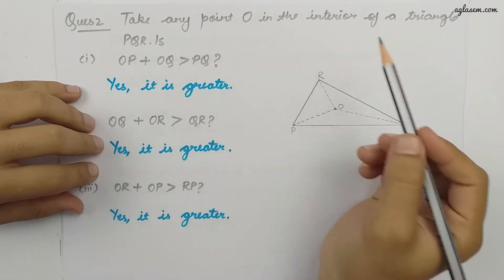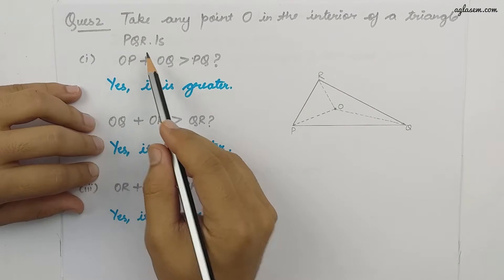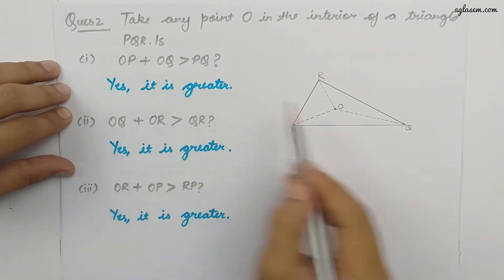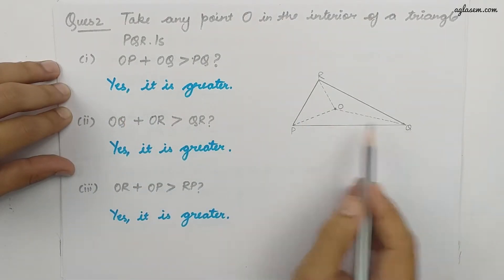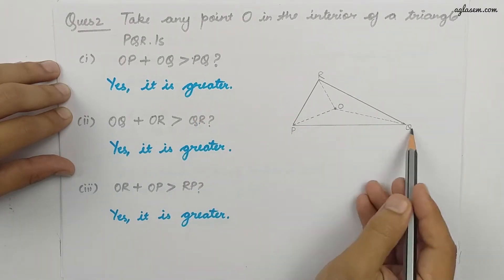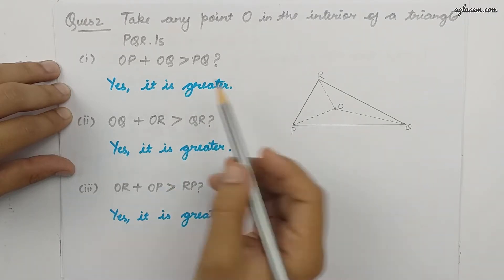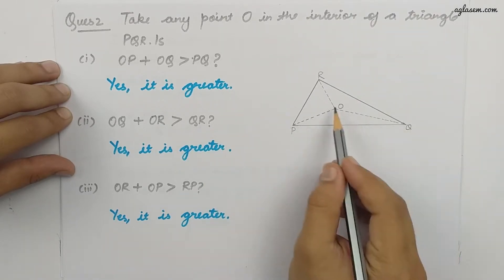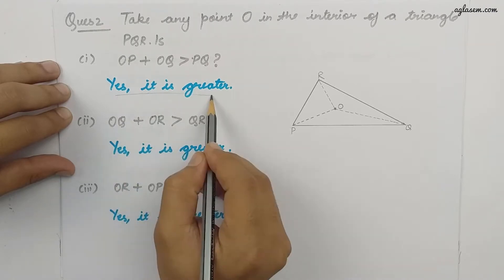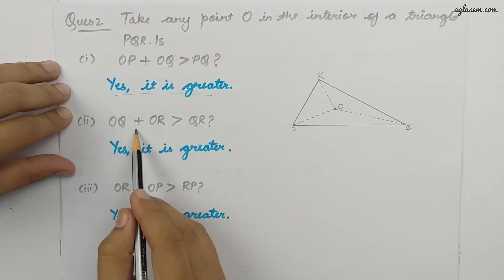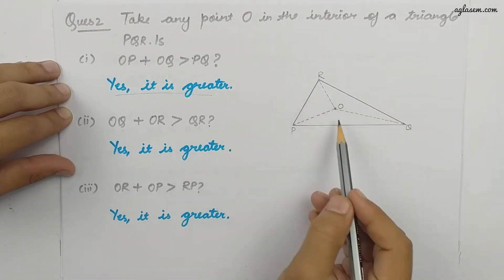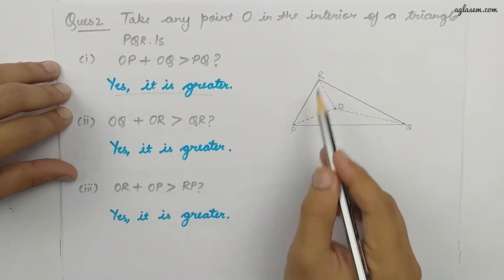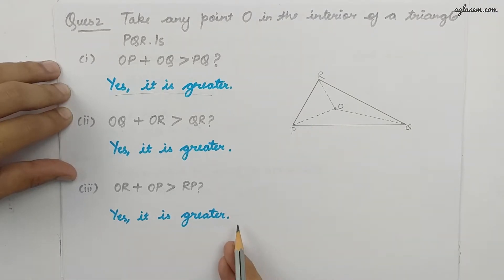Moving to the second question of Exercise 6.4: take any point O in the interior of triangle PQR. The first part is OP plus OQ is greater than PQ — using the same triangle inequality rule, if we add these two sides we find it is greater. Similarly, OQ plus OR is greater than QR, and OR plus OP is greater than RP.